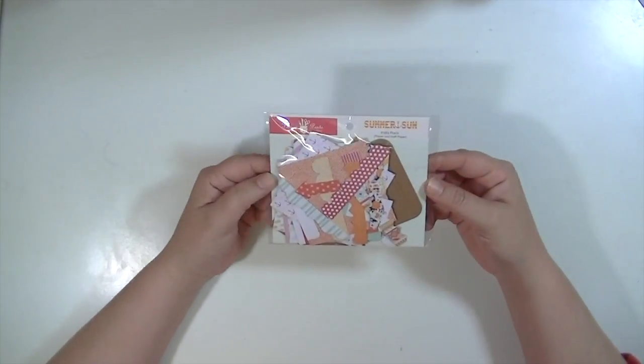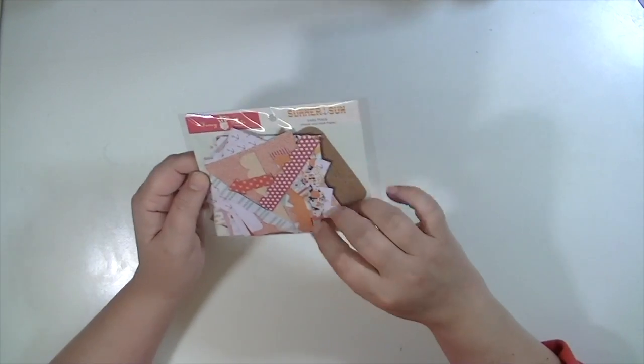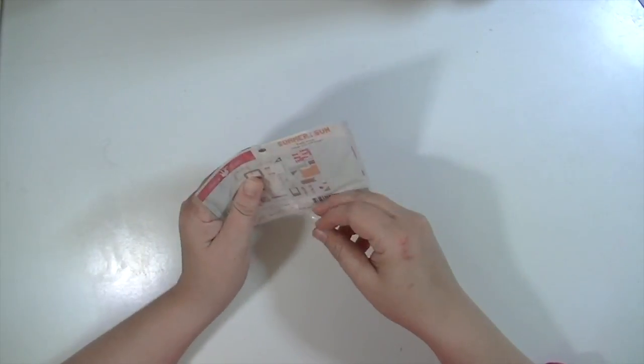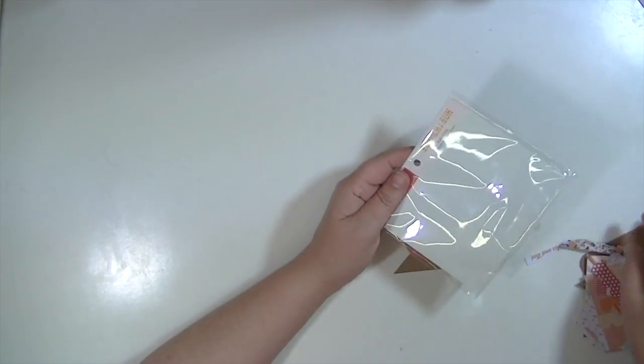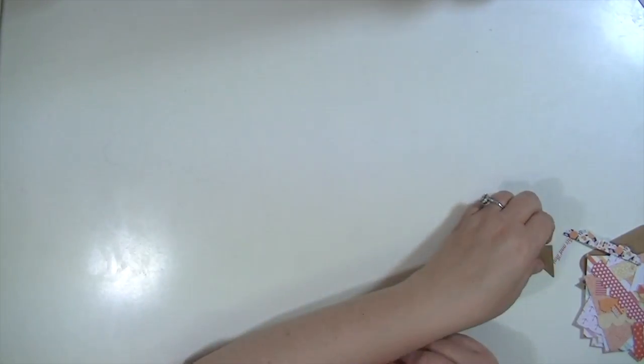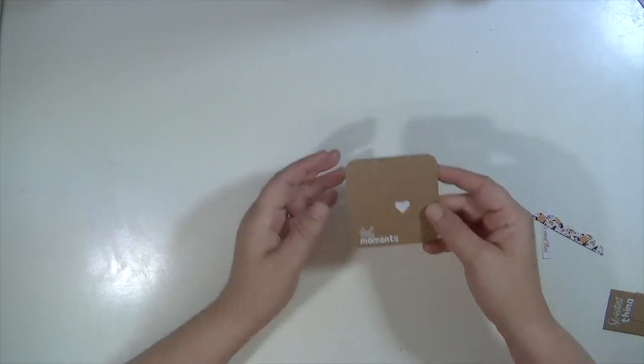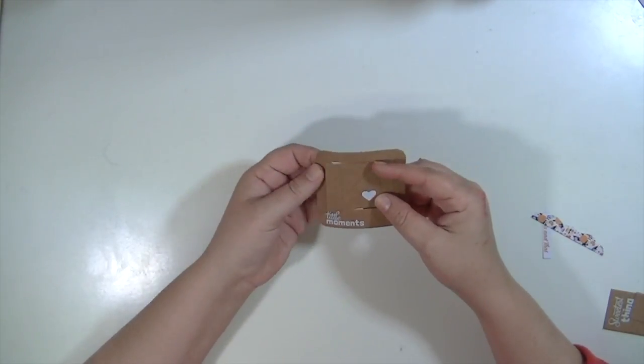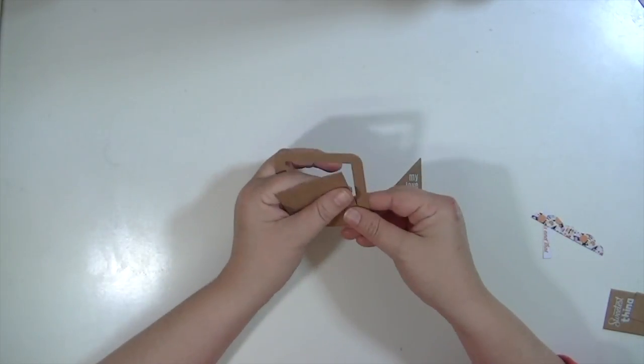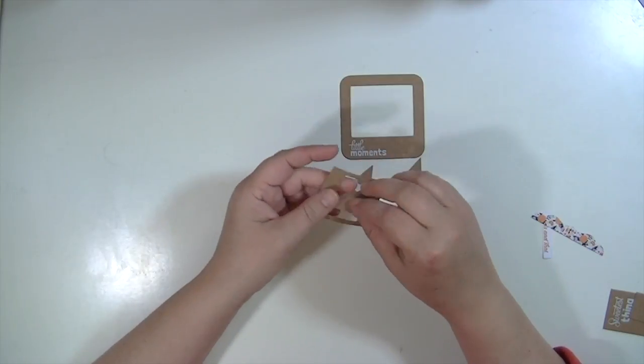From Fancy Pants Summer Sun line. This is called an Instapack. It says paper and craft paper. These packs are jam-full. I don't know what Instapack means. If it's made for 4x4 or Project Life Size. I love that photo corner. It says My Love. Y'all know I love some photo corners. This is a little frame that says Little Moments. Inside of that are more photo corners, one with a heart, and then a plain one. You could use this as a stencil if you want to.